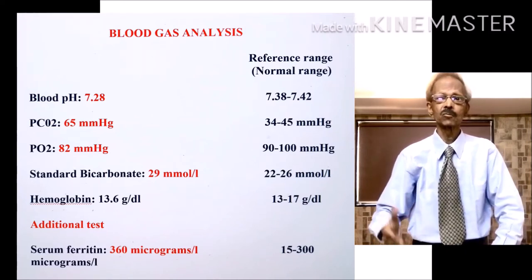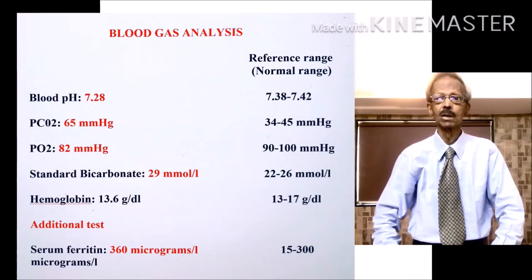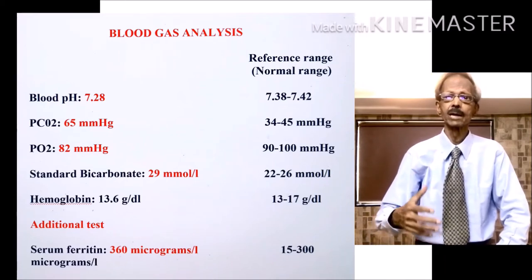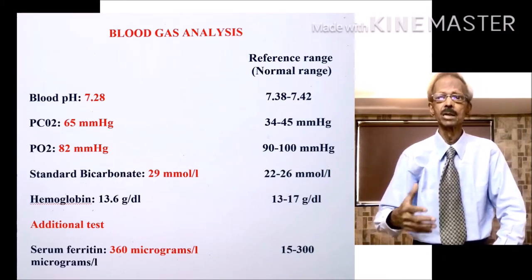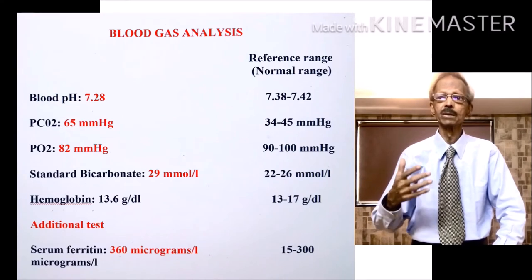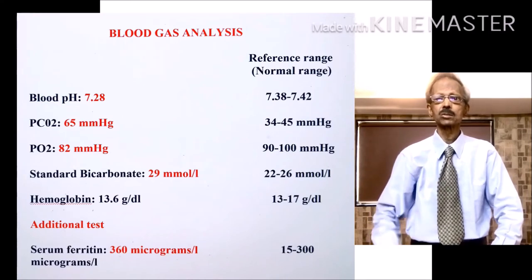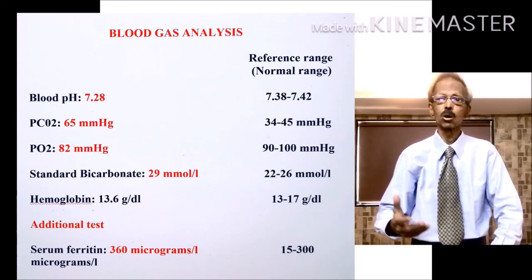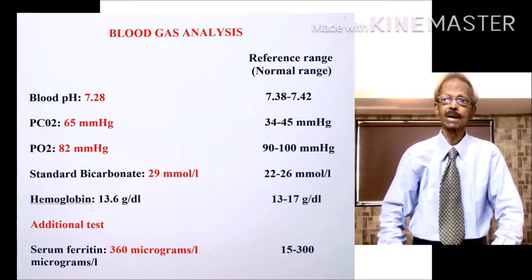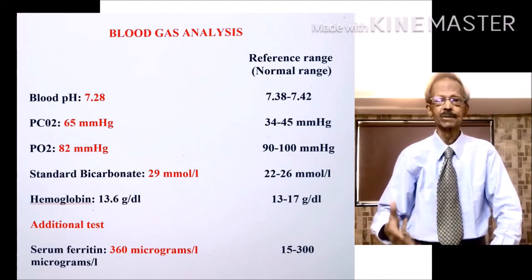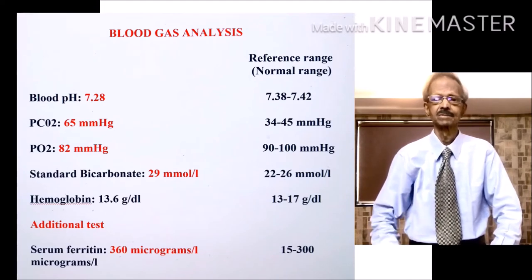The reason for higher levels of carbon dioxide and low oxygen is due to accumulation of fluid in the lungs, caused by the cytokine storm caused by COVID-19 infection.